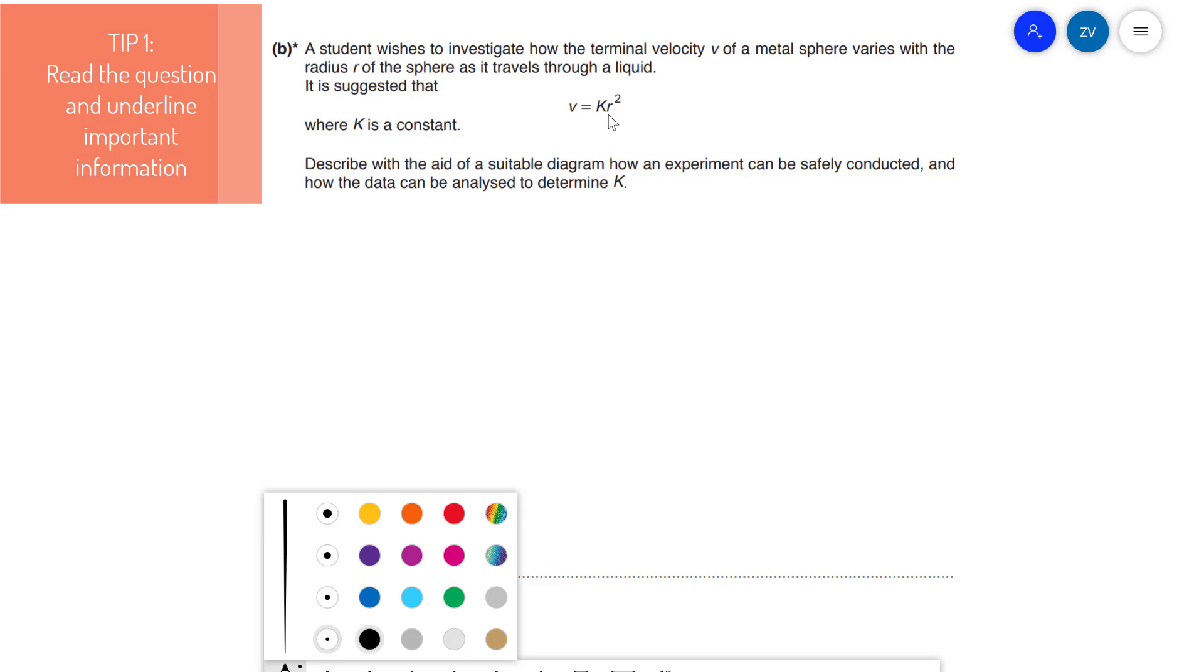It is suggested that V is equal to K times R squared, where K is a constant, V is the velocity, R is the radius. Well, I would instantly be thinking about Y is equal to Mx plus C. In fact, even when I'm reading through the question, I might just write underneath that Y is equal to Mx plus C. V is on the Y axis, R squared is on the X axis, the graph will be a straight line through the origin, and K will be the gradient. And I've not even finished reading the question yet.